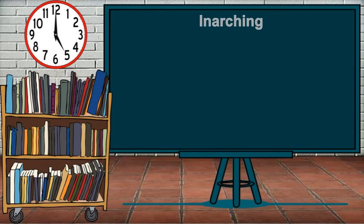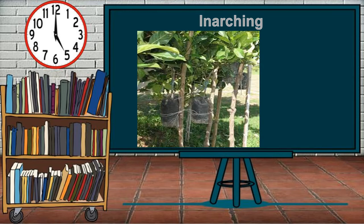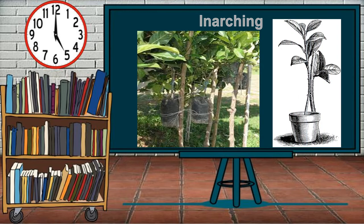Inarching is another artificial method of propagating plants in which the scion is made to unite with the rootstock as they grow independently.